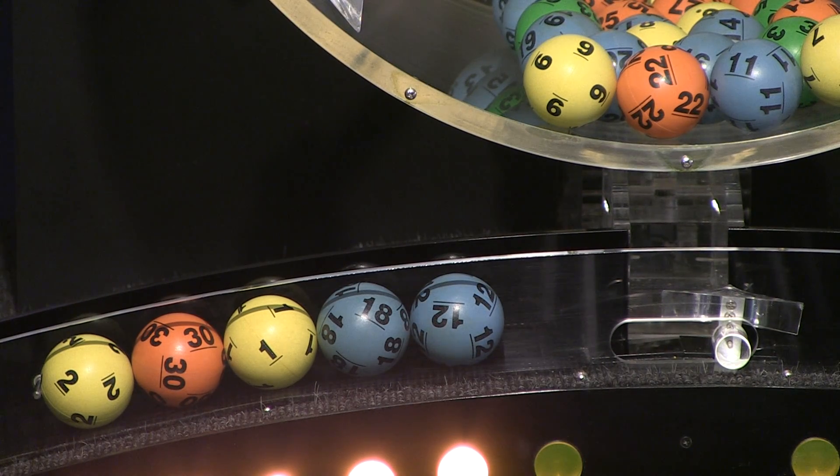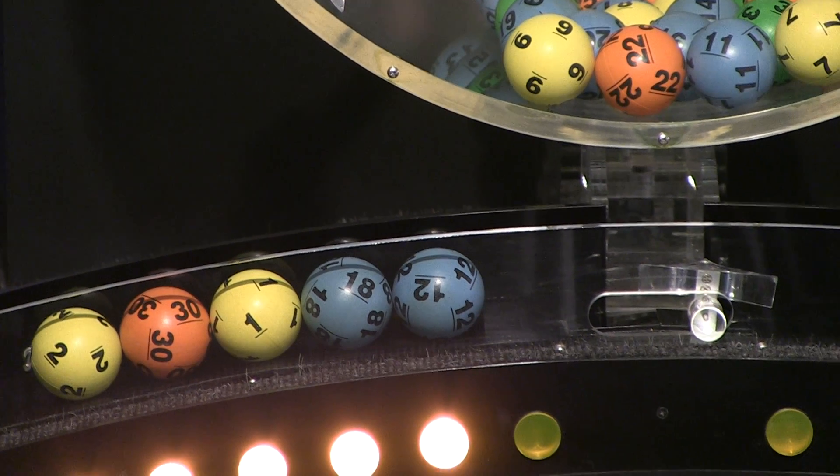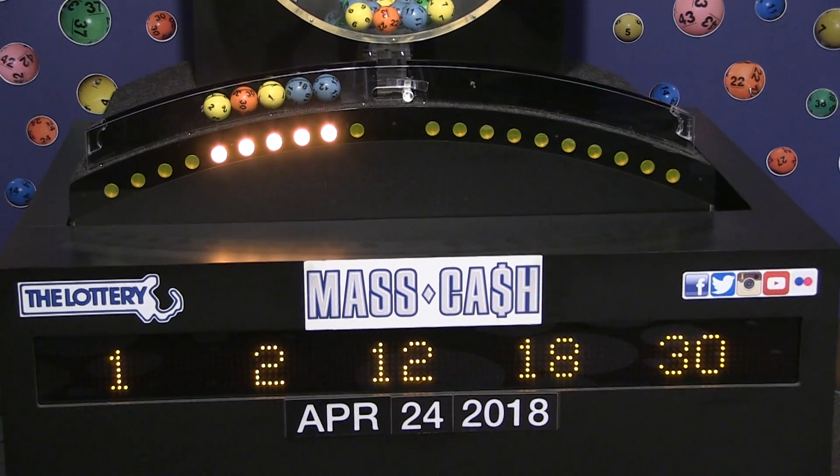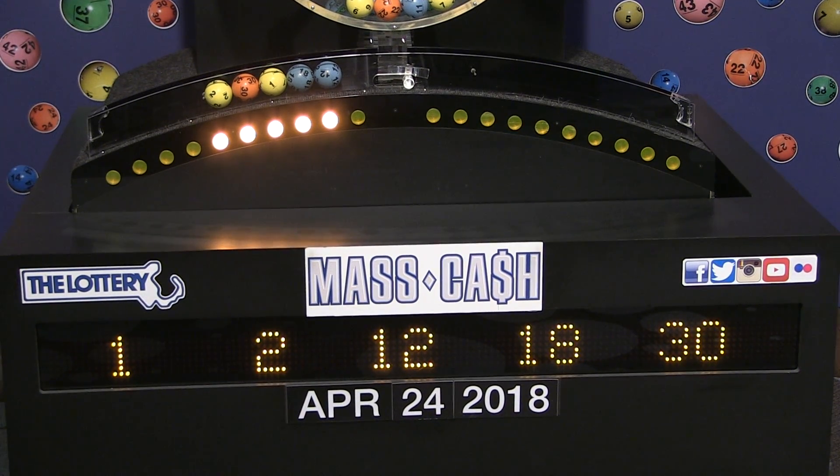Once again, the winning Mass Cash numbers for Tuesday, April 24th are 1, 2, 12, 18, and 30. Remember to log on to masslottery.com, Facebook, and Twitter to watch all of the Mass State Lottery's drawings. Good night.